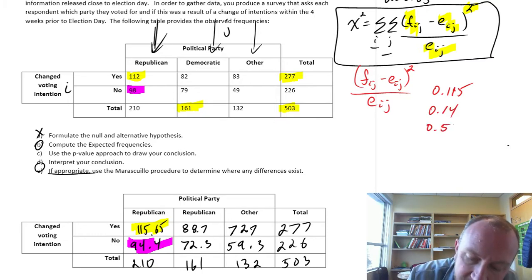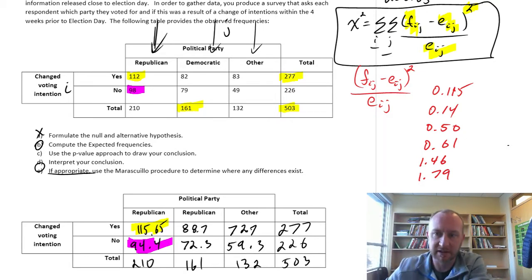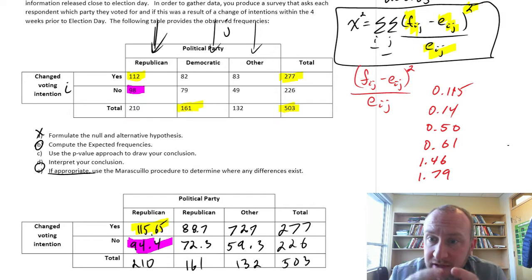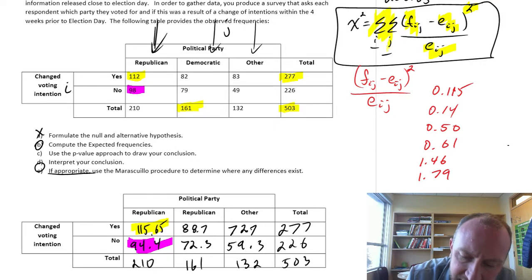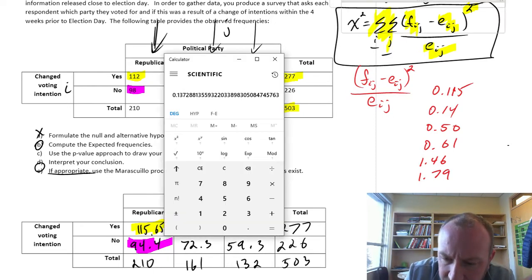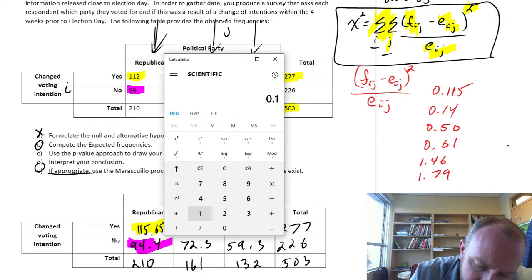Okay, so I've already got all of these calculated. The next one would be 0.5, 0.6, 1.46, 1.79. So we should have 6. So that's comparing all of the observed frequencies and the expected frequencies, squared and divided by the expected. So those are all of those individual components, and now we have to add all of those up. So now we apply this summation. And so here, we'll add those all together.